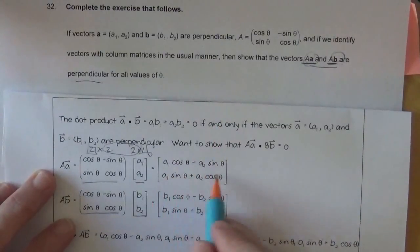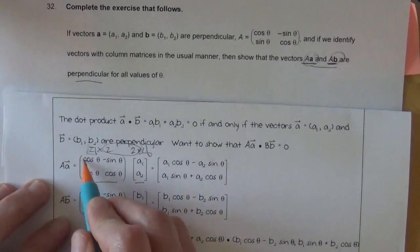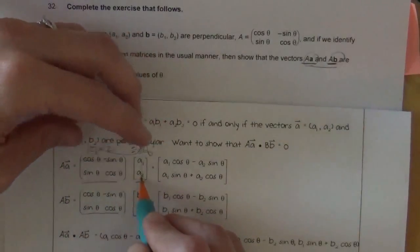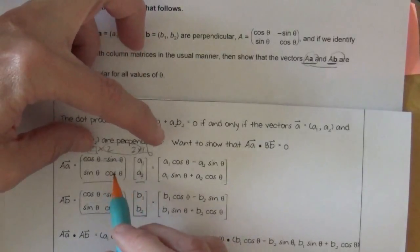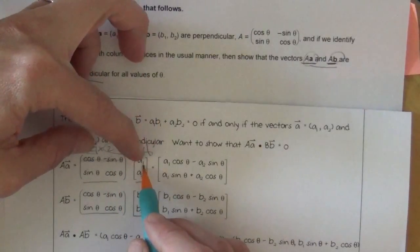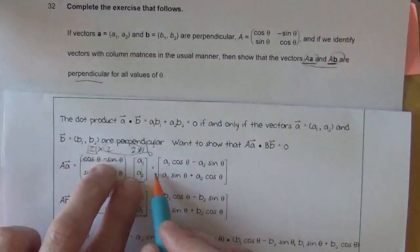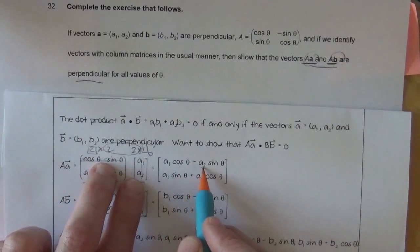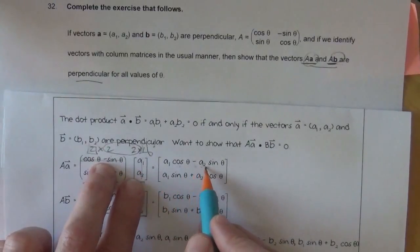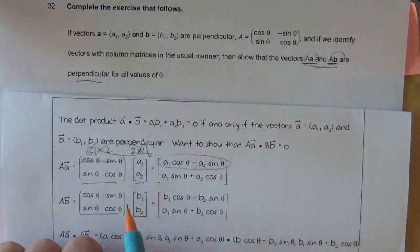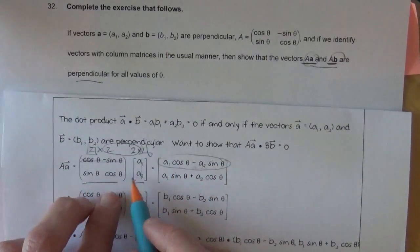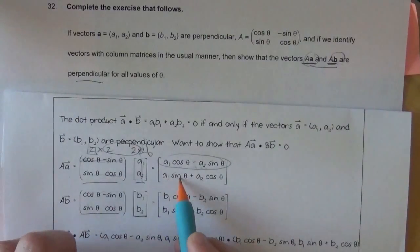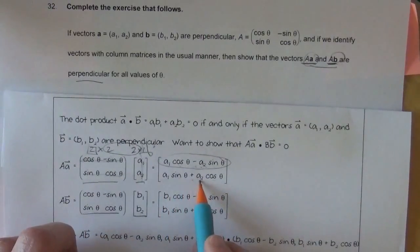Our answer will be a 2 by 1 matrix, which they have here. They're getting these terms by multiplying or basically dotting this row with this column. So it's cosine theta times A1 plus negative sine theta times A2. So this is cosine theta times A1 minus A2 times sine theta. So this is all one thing.